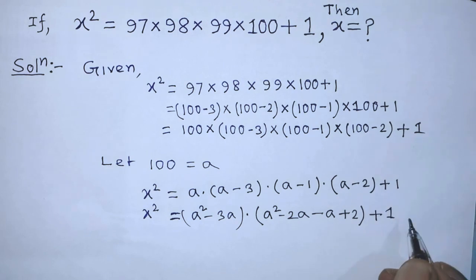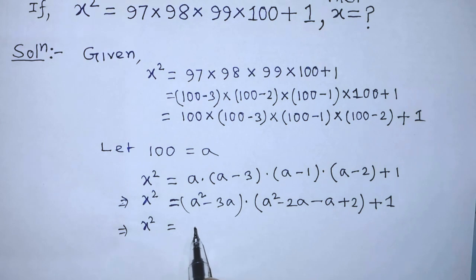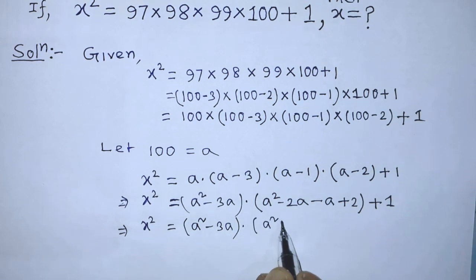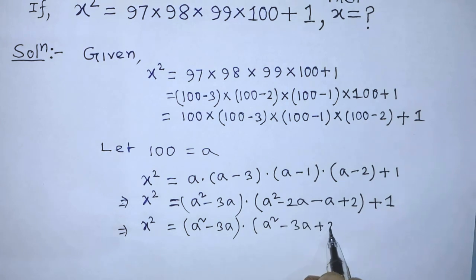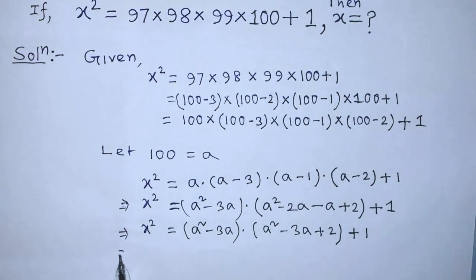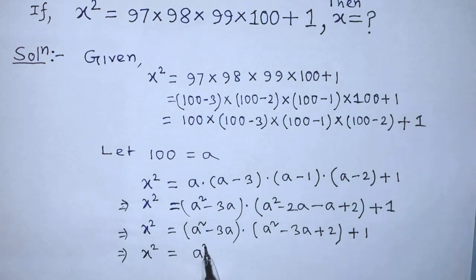So x² = (a² minus 3a) times (a² minus 3a + 2) plus 1. We can write from this algebraic expression: (a² minus 3a) whole to the power 2 plus 2 times (a² minus 3a) plus 1.